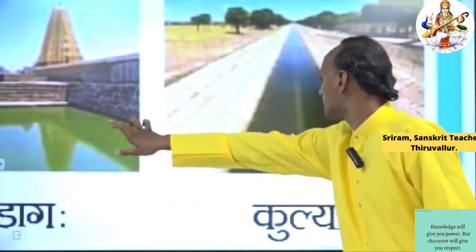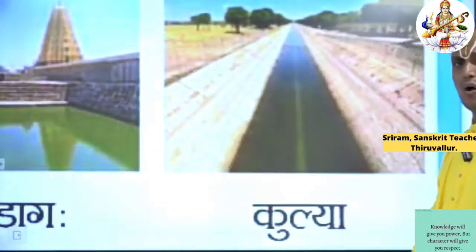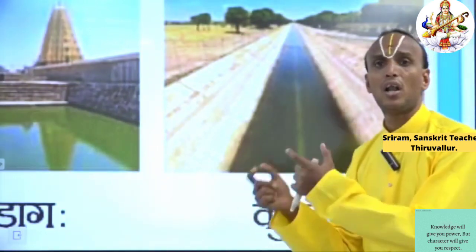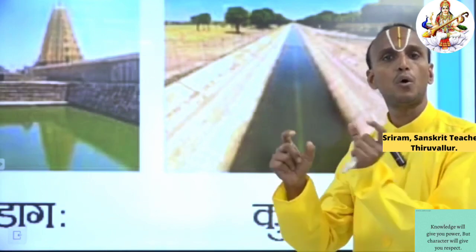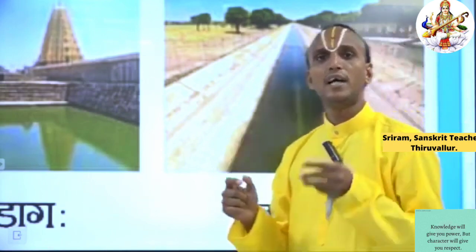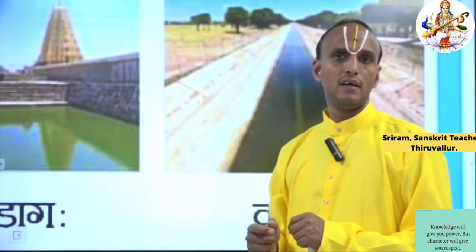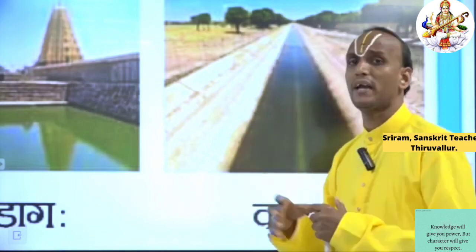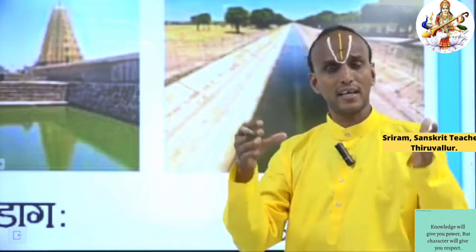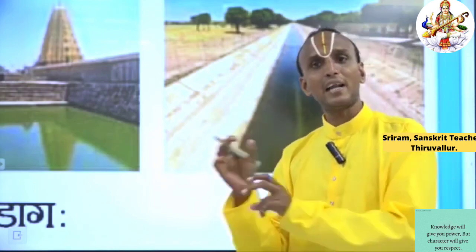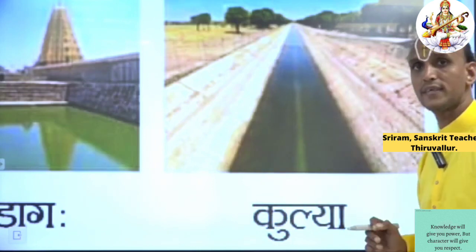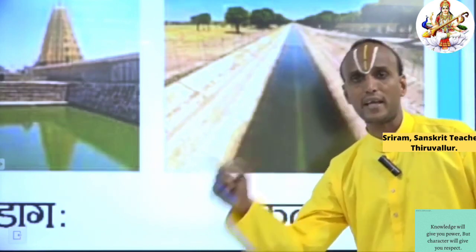Then the next one — Kulya. What is meant by Kulya? Kulya means Canal — an artificial water canal. In Tamil we say Near Odai. It is not the same as Tadagaha (Pond). Kulya refers to an artificial canal or artificial river.